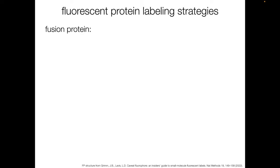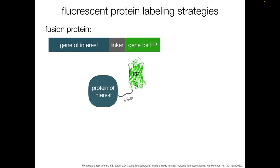In the first method, the gene for the fluorescent protein is fused to a gene of interest, usually with a sequence that codes for a short, flexible linker in between. Once translated, the fluorescent protein will be fused to the protein of interest via the linker. This method provides very specific labeling of the protein of interest.